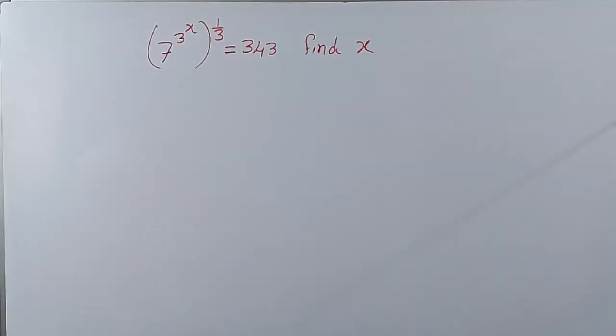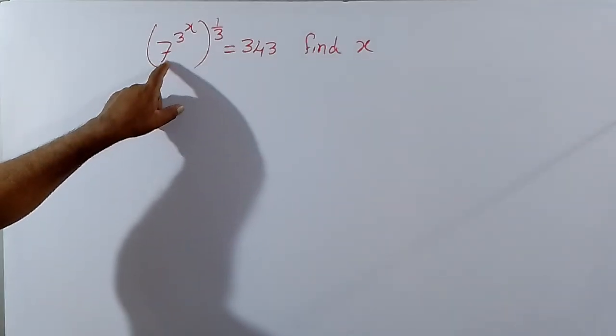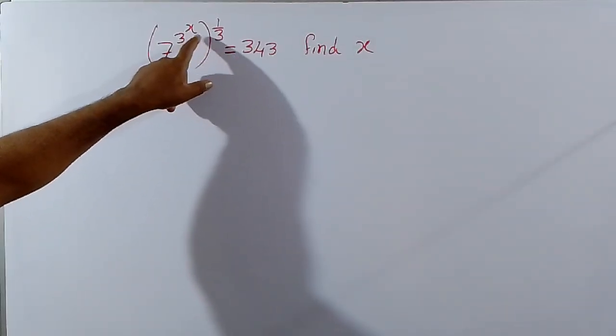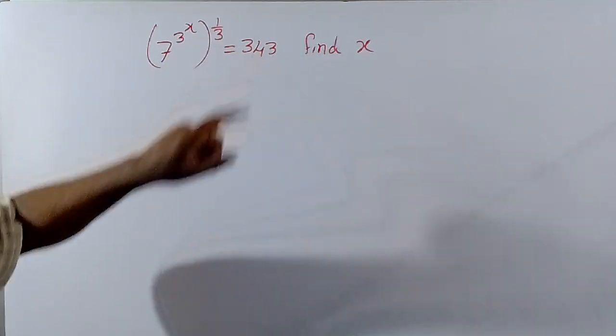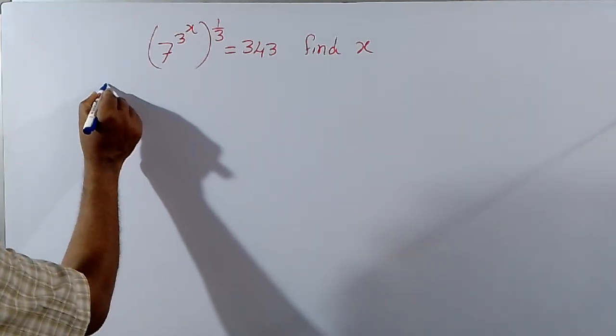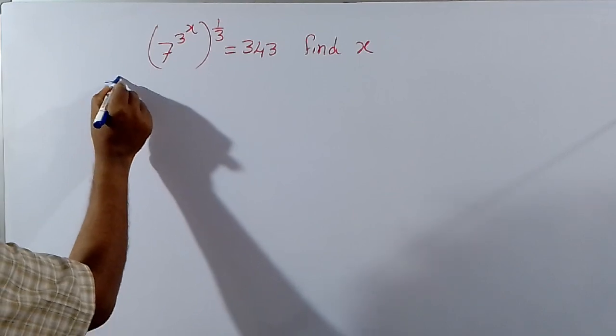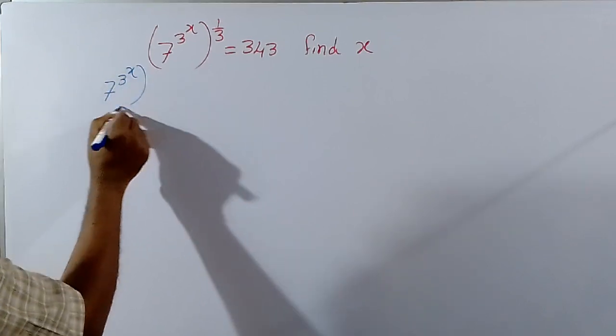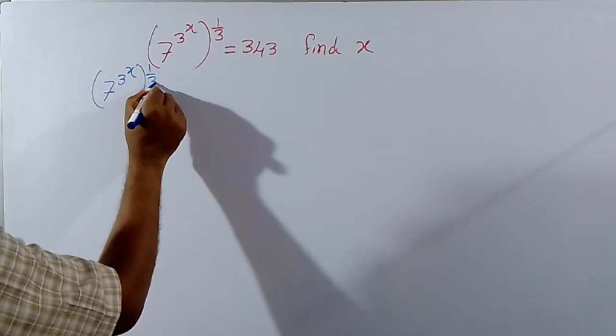So exponents, you will say 7 power 3 power x whole power 1 by 3 equal to 343. Find the value of x.